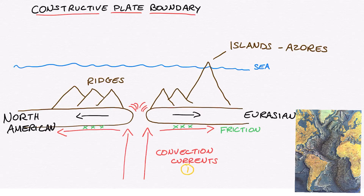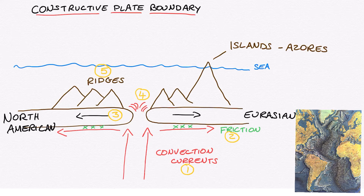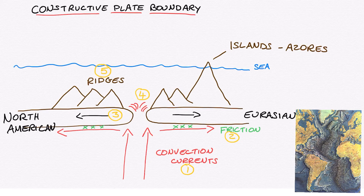If you look at this diagram, I've added five different numbers. These five numbers help explain in order what is happening. Number one, the convection currents rise upwards. Number two, they move left and right and the friction will drag the plates in the same direction. Number three and number four, magma is extruded from deep inside the mantle. Number five, this forms ridges, islands, and seamounts.